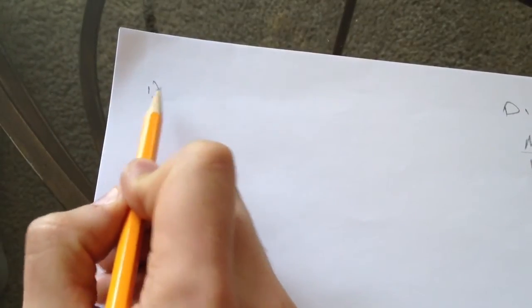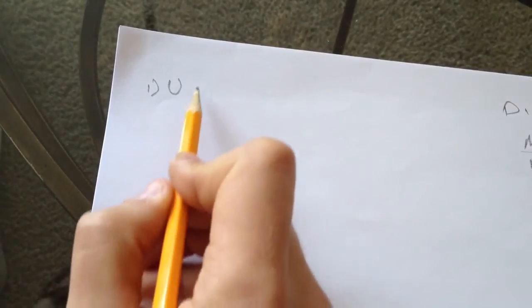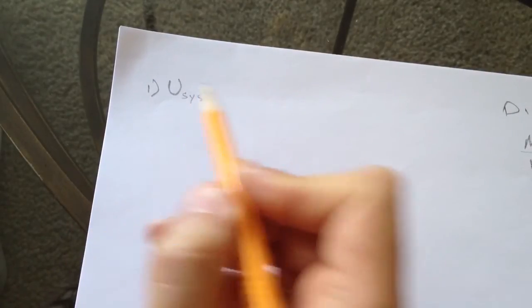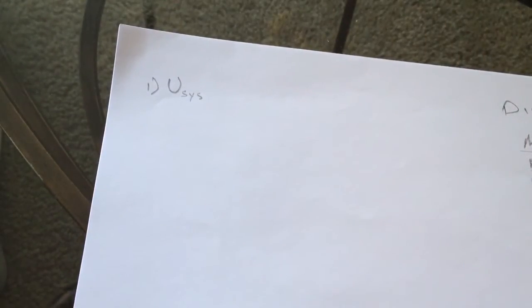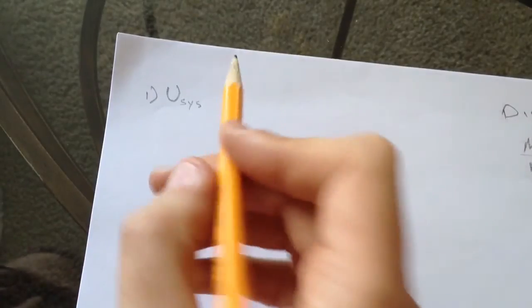The first question asks what is the energy of the system. The system started at rest and the weight went down until the speed was 2.2 meters per second. They're asking what is the energy of the system.